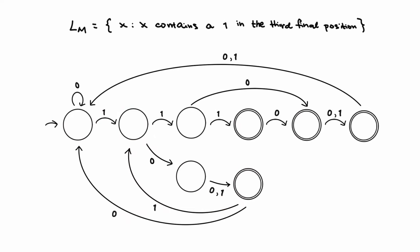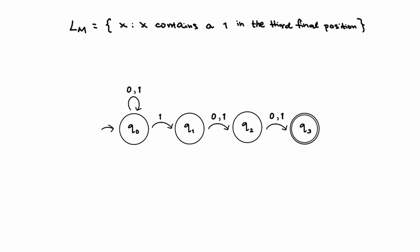The NFA that recognizes the same language will be as simple as this. Notice how when a 1 is encountered, Q0 can choose to remain in Q0, or it could transition into Q1. There are also no arrows coming out of the accept state Q3.